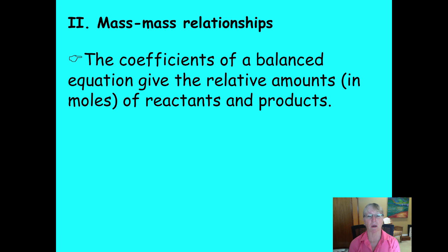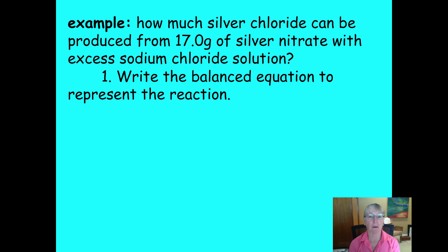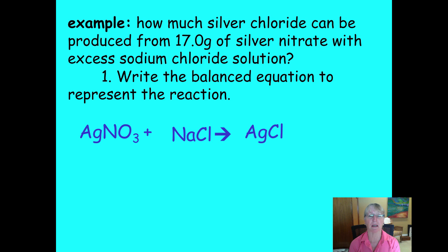The coefficients of a balanced equation give you relative amounts, but they only work for moles. You'll use the molar ratios from the balanced equation, plus the periodic table for molar masses, to convert grams into moles or moles into grams as needed. Writing the balanced equation is always your first step. For example: silver nitrate plus sodium chloride produces silver chloride precipitate and sodium nitrate.